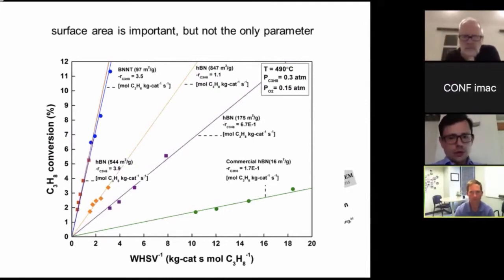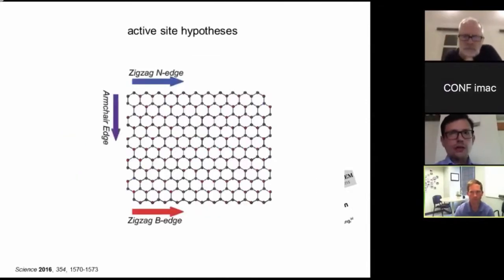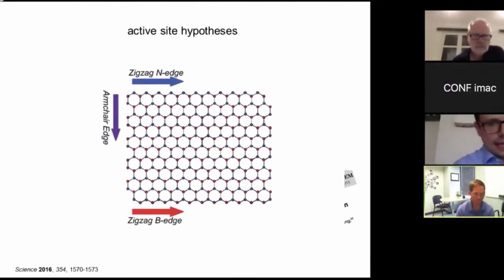So the slope of these plots here signify the reaction rate. It tells you how much propane is converted per kilogram of catalyst per second. As we can see, increasing the surface area of the boron nitride does lead to some improvements in the reaction rate. However, all of a sudden, this 540 square meter per gram material has a higher performance than 850 square meter per gram material. So surface area is not the only parameter that is important. Of course, people working catalysis appreciate this for a long time that it's most often not the straight surface of the material, but edges and corners and defect sites that are the sweet spots that you want.